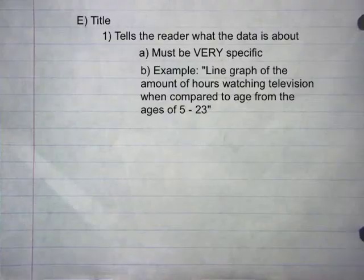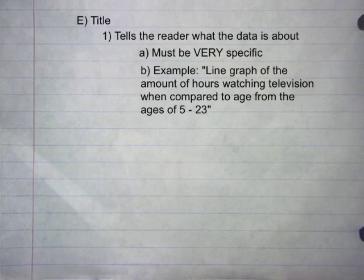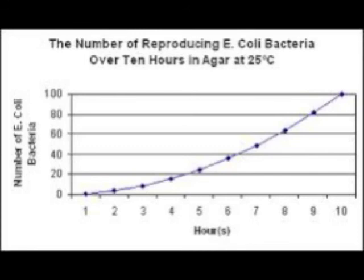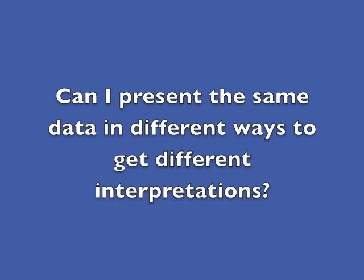Title. The title tells the reader what the data is about, and it must be very specific. For example: a line graph of the amount of hours watching television compared across ages 5 to 23. Graph titles are very specific so that any person reading the chart or graph is not confused about what the data is telling them.